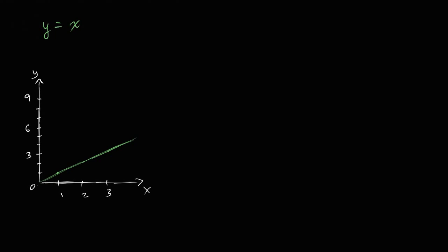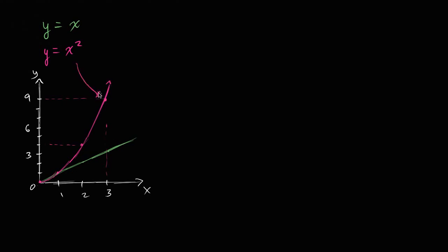Now let's also plot a quadratic — y is equal to x squared. That's actually why I went up to 9 on the y-axis. When x is 0, y is 0. When x is 1, y is 1. When x is 2, y is 4. When x is 3, y is 9. So the graph of y = x² on these axes looks something like a curve. We're used to recognizing this shape as a quadratic, and a line as a linear function.